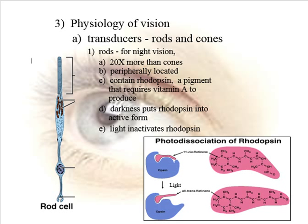The rods tend to be peripherally located. We're going to find out in a minute that the center of our visual axis, an area called the fovea, has only cones. So the rods tend to be peripherally located.